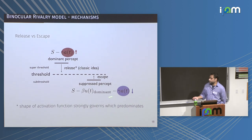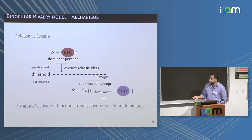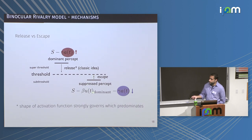One mechanism has fatigue building up on the dominant population, with the suppressed population approaching threshold as the dominant one decays down. The other mechanism — the one that was neglected — is that you have residual fatigue from the last time a population was on, and that's decaying away, allowing the suppressed population to rise toward threshold. These are the two possible mechanisms, and it's actually the escape mechanism — the second one — that explains Levelt's.